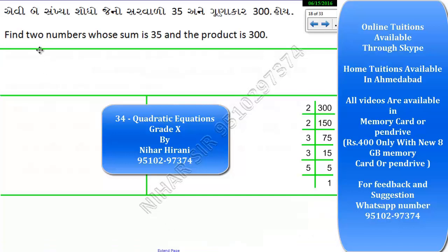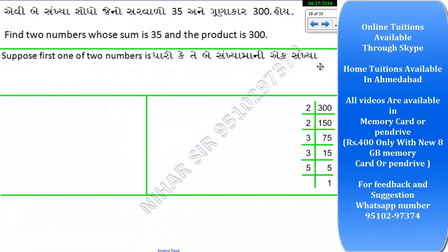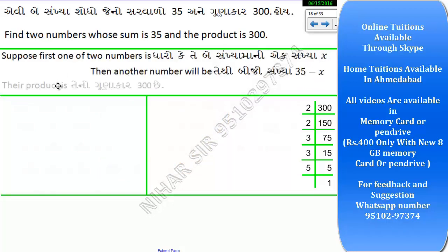Hello friends, let's solve this problem: find two numbers whose sum is 35 and product is 300. Let's suppose one of the numbers is x, and the second number is 35 minus x.